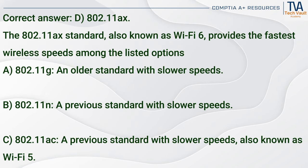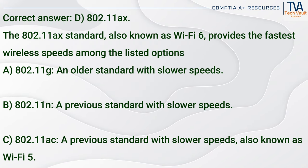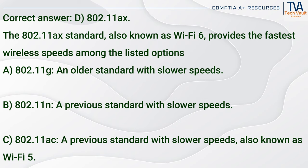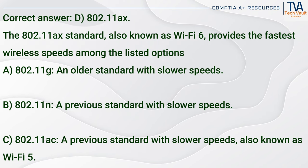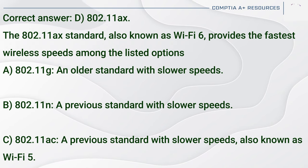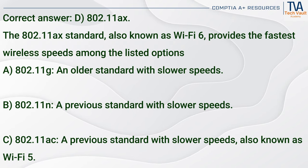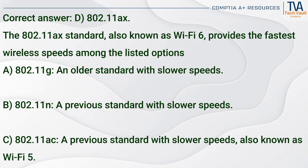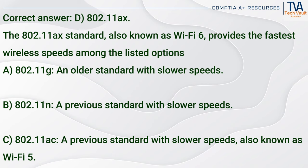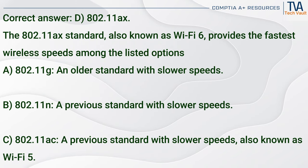Correct answer: D. 802.11ax. The 802.11ax standard, also known as Wi-Fi 6, provides the fastest wireless speeds among the listed options. 802.11g (A) is an older standard with slower speeds. 802.11n (B) is a previous standard with slower speeds. 802.11ac (C) is a previous standard with slower speeds, also known as Wi-Fi 5.